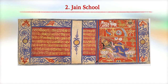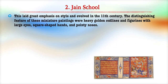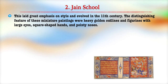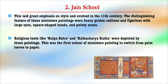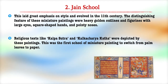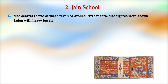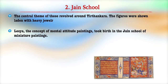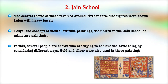The second important school was the Jain school, which laid great emphasis on new styles around the 11th century. The distinguishing features of these miniature paintings were heavy golden outlines, figures with large eyes, square-shaped hands, and pointy noses. Religious texts like the Kalpasutra are depicted in these paintings. This was the first school of miniature painting to switch from palm leaves to paper. The central theme revolved around Tirthankaras, and figures were shown loaded with heavy jewelry. For the first time, gold and silver were also used in these paintings.